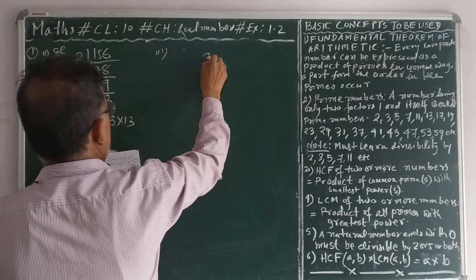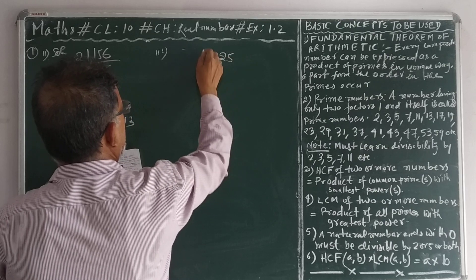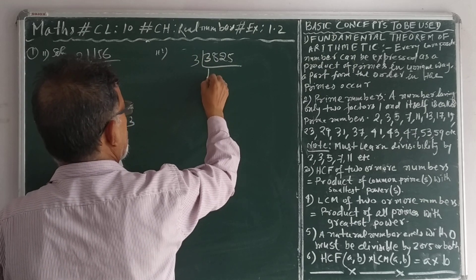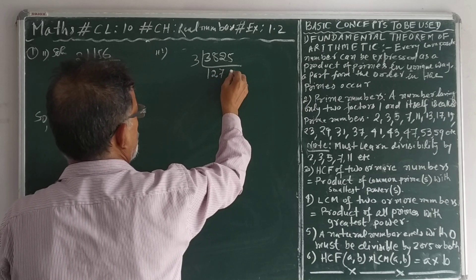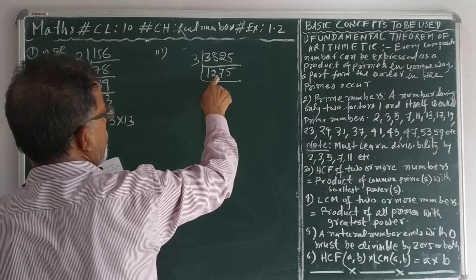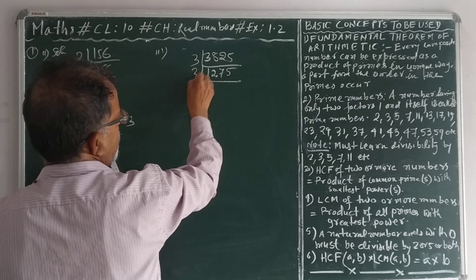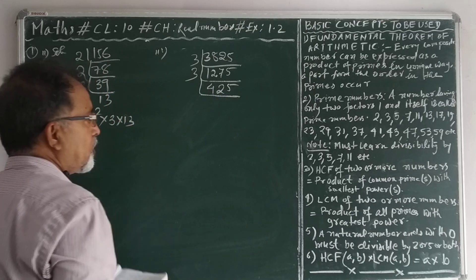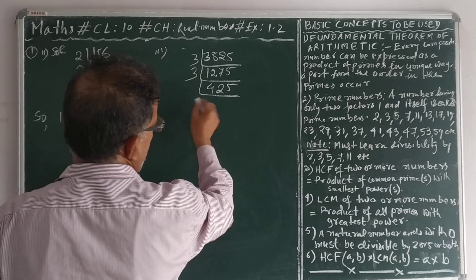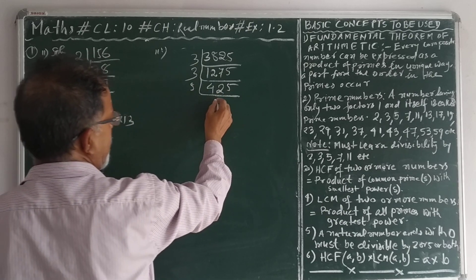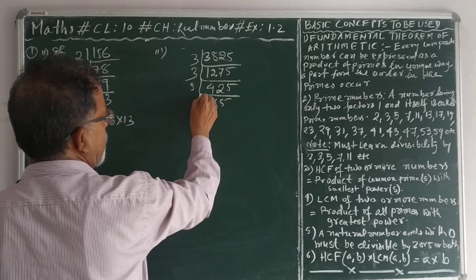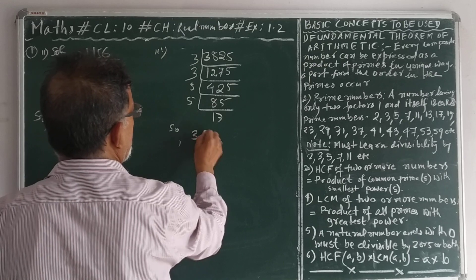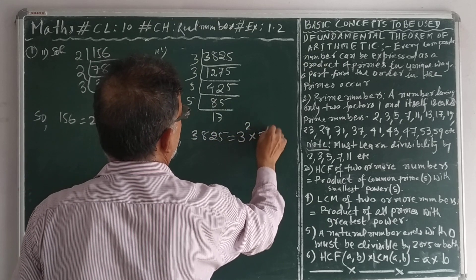Question number 3: 3825. The sum of the digits is 18, so 3 is a factor of this number. Dividing step by step: 1+2+7+5 is 15, so this is a multiple of 3. It ends with the digit 5, so 5 is also a factor. Therefore, 3825 is equal to 3 to the power 2 into 5 to the power 2 into 17.